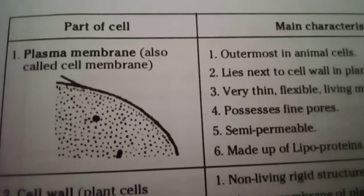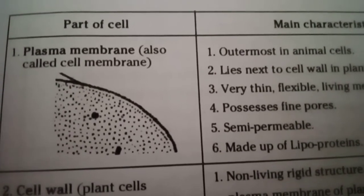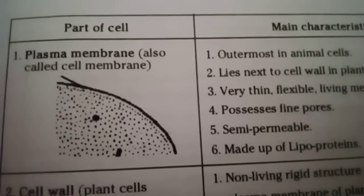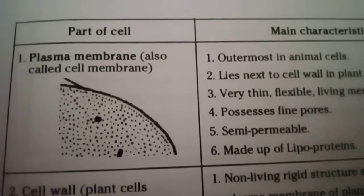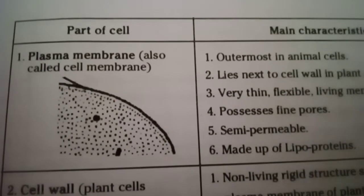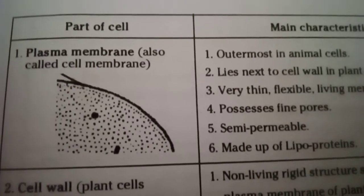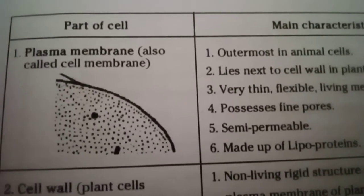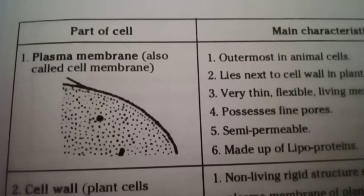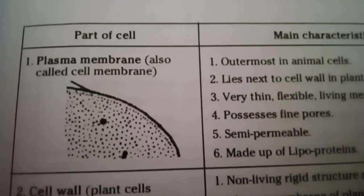We know all living organisms are made of cells. The cells were first observed by Robert Hooke in 1665, and Anthony von Leeuwenhoek was the first to see living bodies under the microscope, which he had constructed himself.